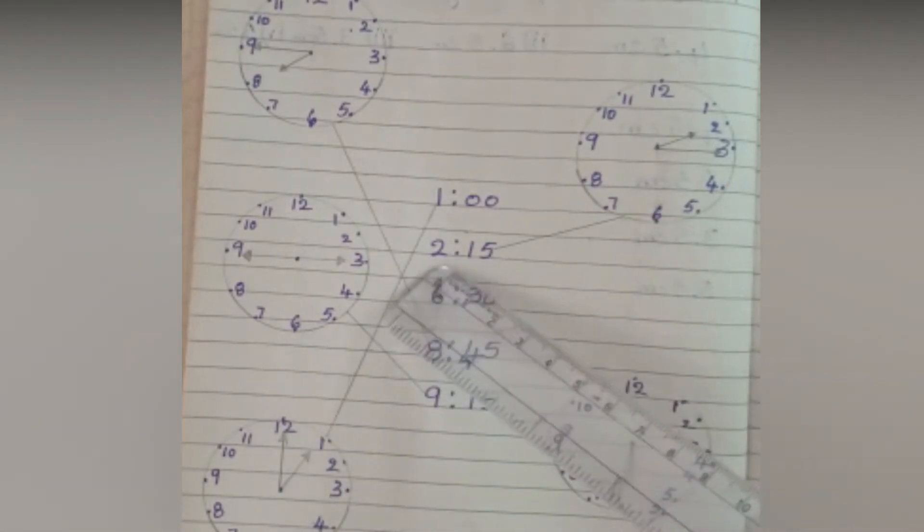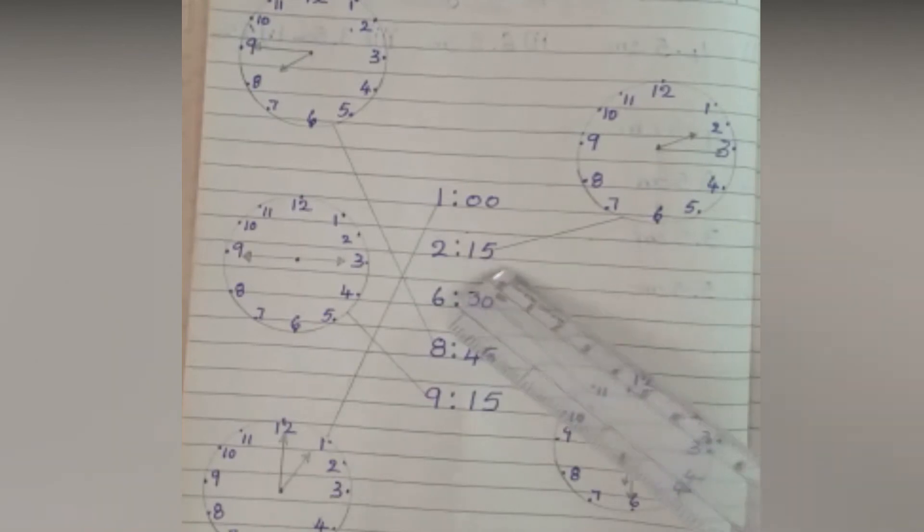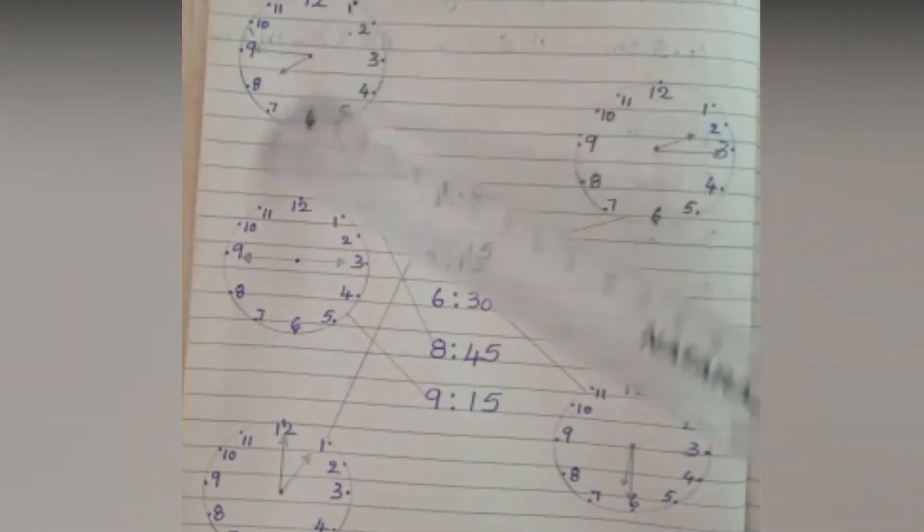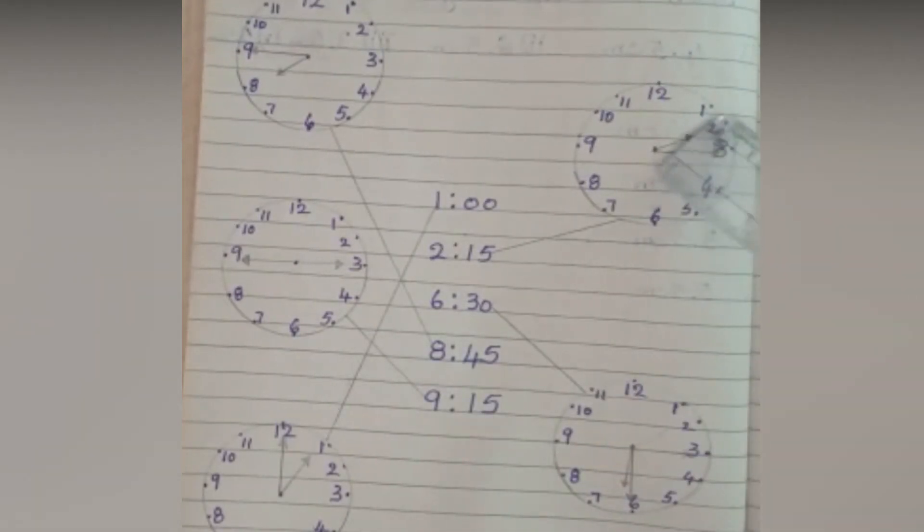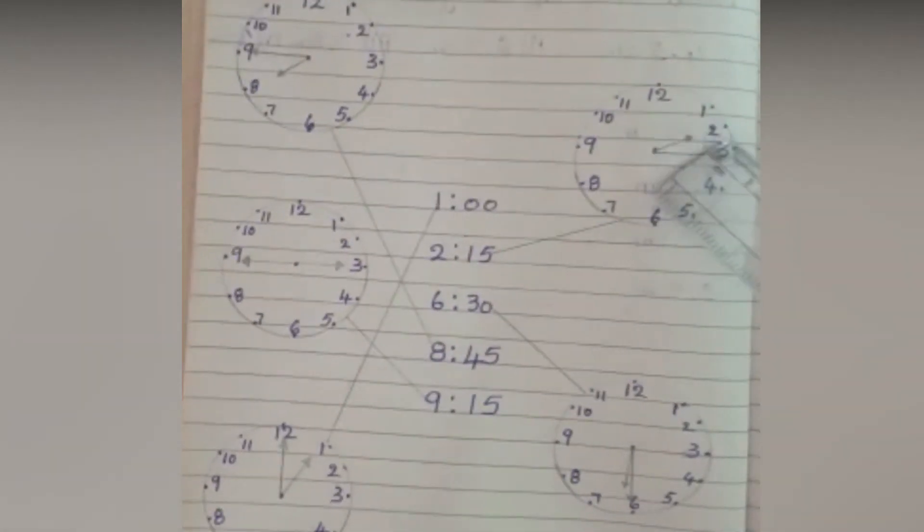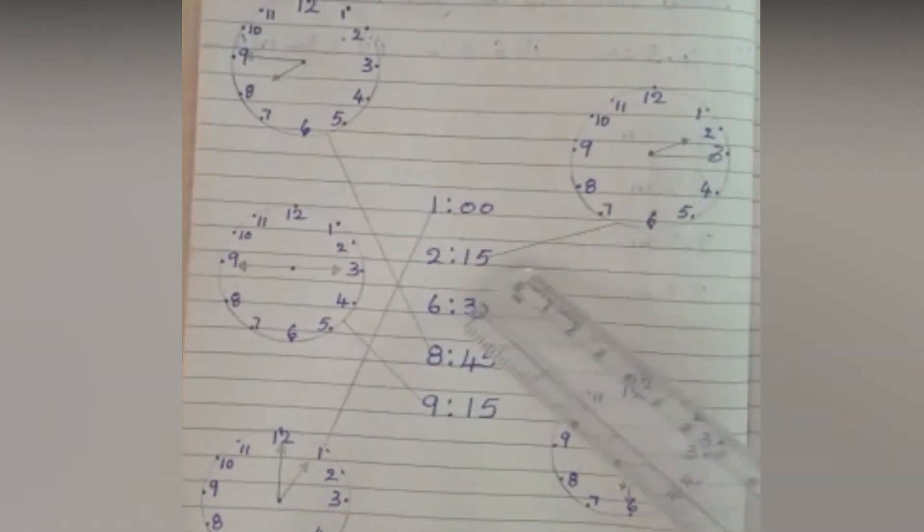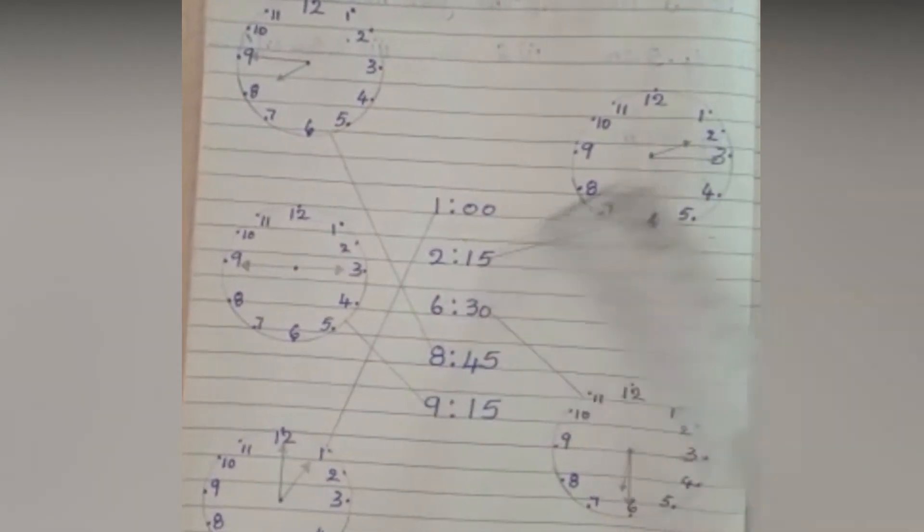Likewise, check for 2 hours 15 minutes among these four analog clocks. Yes, this clock is showing 2:15. So draw a line between these two.